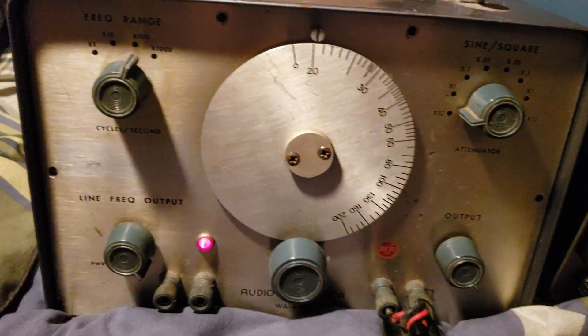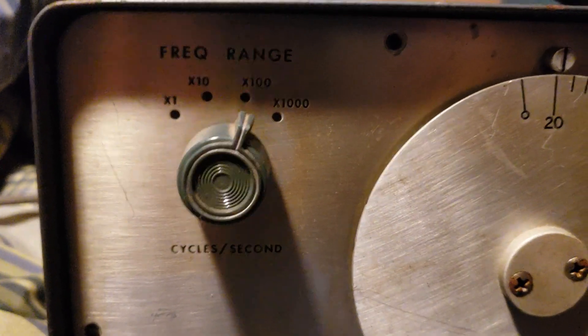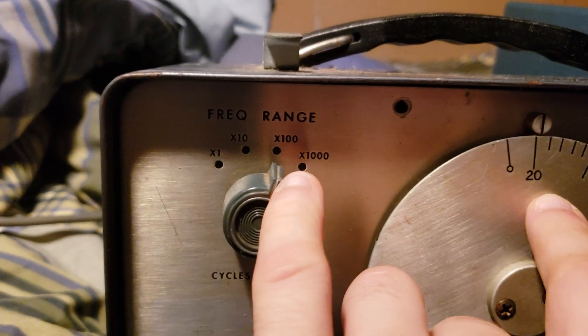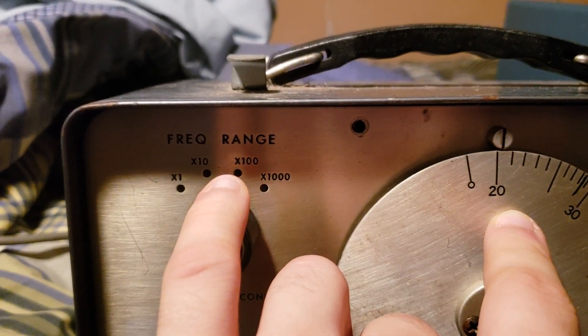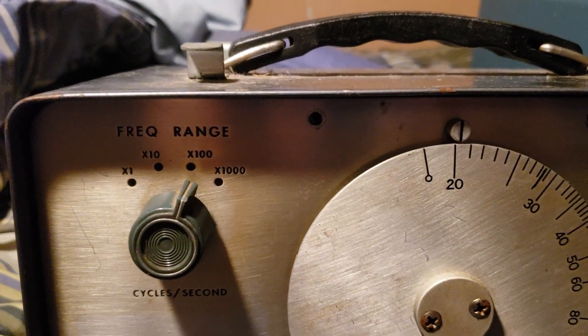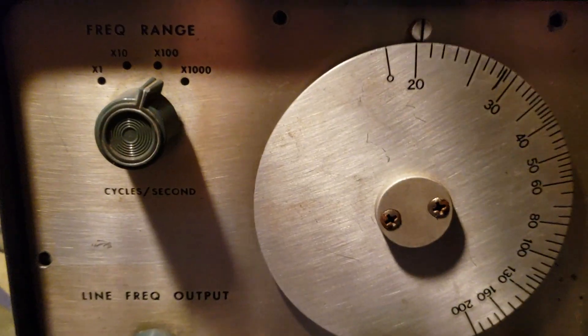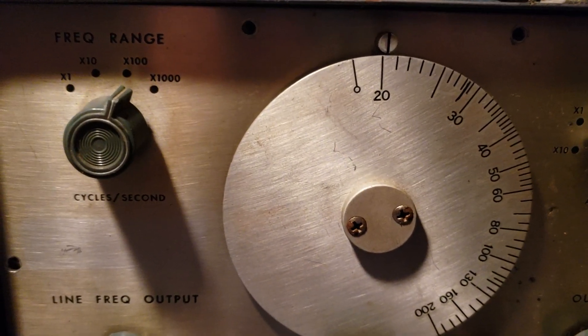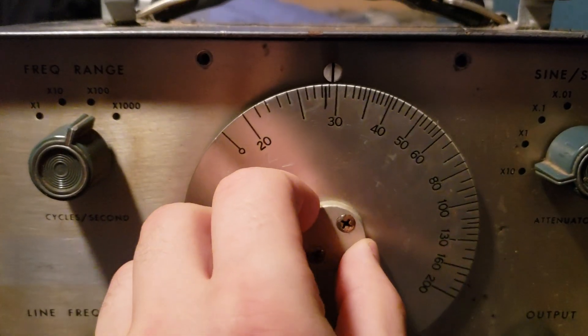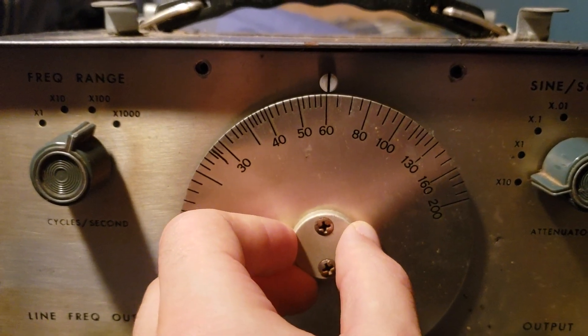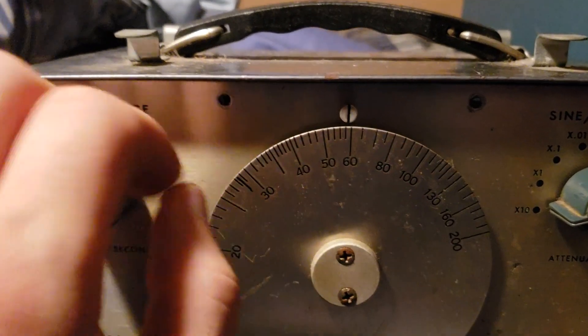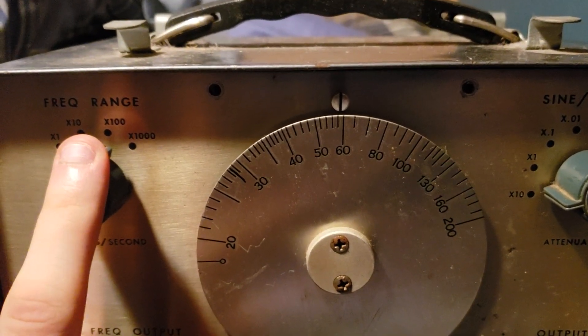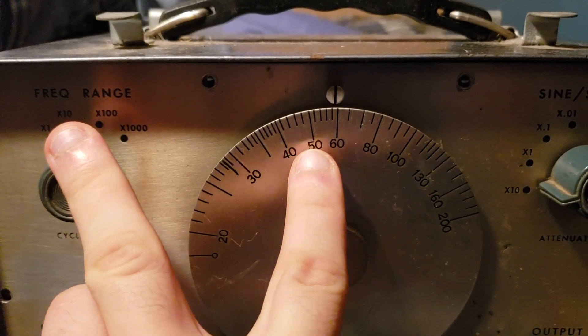We also have a frequency range here. How you would figure this out is, this is at 20, and then you multiply it by 100. So that would give you 2,000. Right now you are hearing a 2,000 Hz wave, or a 2 kHz wave. We can bring it up. 60 times 100 is 6,000. So that is a 6 kHz or 6,000 Hz wave that you're hearing now.